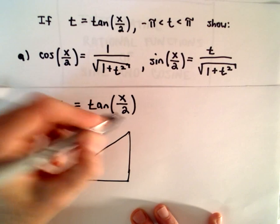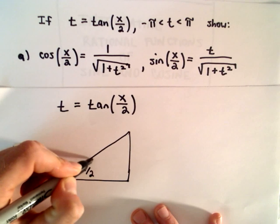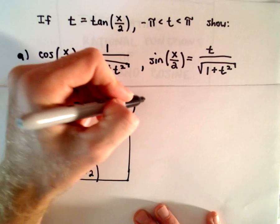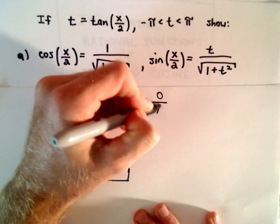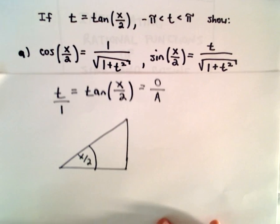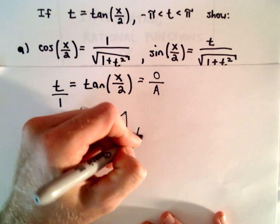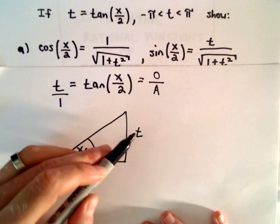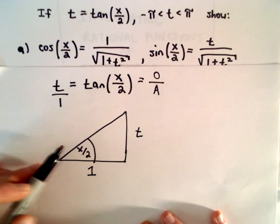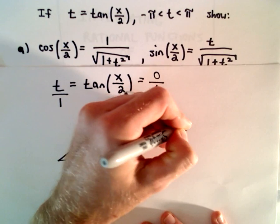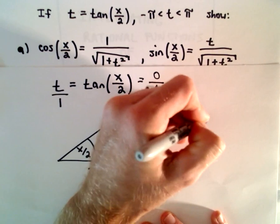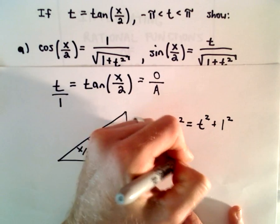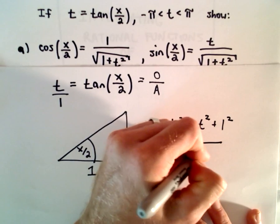So I've got tangent of something — that's going to be my angle, which is x over 2. I'm going to write t as t over 1. Remember, tangent is just the ratio of the opposite side to the adjacent side. So in this case, the opposite side would have a value of t, and the adjacent side would have a value of 1. We can figure out the hypotenuse using the Pythagorean theorem: the hypotenuse squared equals t squared plus 1 squared, so the hypotenuse is the square root of t squared plus 1.